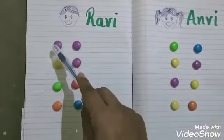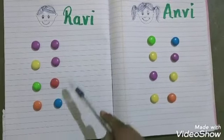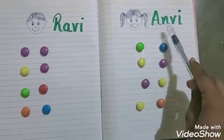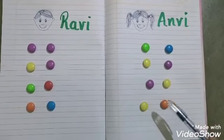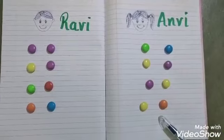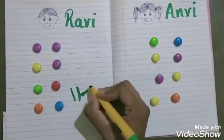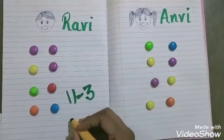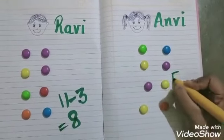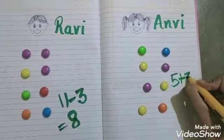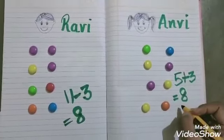Now Ravi has 1, 2, 3, 4, 5, 6, 7, 8 — Ravi has 8 candies. And Anvi has 1, 2, 3, 4, 5, 6, 7, 8 — Anvi has 8 candies. Ravi ke paas sabse pehle 11 candies thi, jismein se 3 candies usne Anvi ko de di, to ab Ravi ke paas total candies bachi 8. Aur Anvi ke paas pehle 5 candies thi, 3 candies Ravi ne usko di — yaani 3 candies usne Ravi se li — to ab uske paas 5 plus 3 is equal to 8. Anvi ke paas total candy kitni hai? 8.